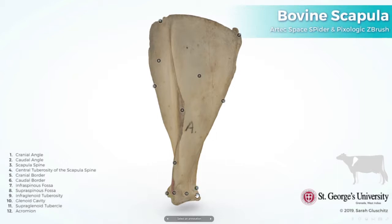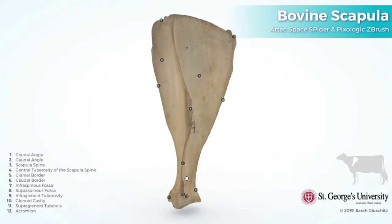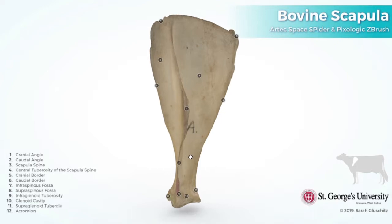Tubercles: at the caudolateral part of the scapula bone there is a tubercle which is the site of attachment of the tendon of the teres minor muscle. At the ventral part of the scapula bone, above the glenoid cavity, there is a tubercle called the supraglenoid tubercle. The supraglenoid tubercle is the site of attachment of the tendon of the biceps brachii muscle.